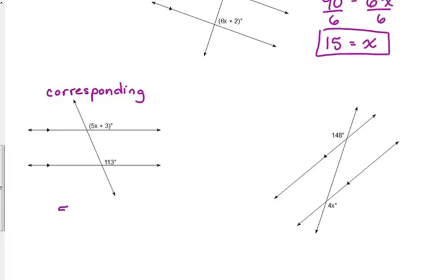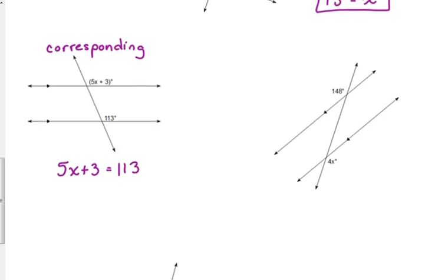So these are also equal to each other. 5x plus 3 is equal to 113. So we subtract 3 from both sides. 5x is equal to 110. And so x is equal to 22. 22 equals $1.10. Just if you want to think about it that way.